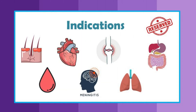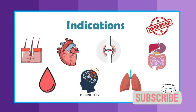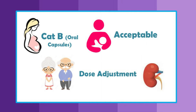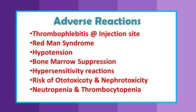Since these are reserved-category antibiotics, they are used for severe skin and soft tissue infections, blood infections, endocarditis, meningitis caused by methicillin-resistant Staphylococcus aureus, bone and joint infections, hospital-acquired and ventilator-associated pneumonias, and enterocolitis including Clostridioides difficile infections. Vancomycin capsules are category B in pregnancy and are safe to use, but IV infusions are not recommended in pregnancy. For lactating mothers, glycopeptide antibiotics are safe. In elderly and renal patients, dose adjustments are required.